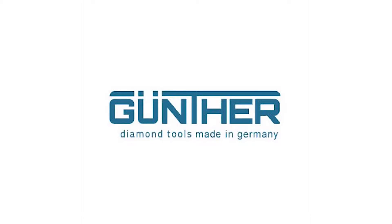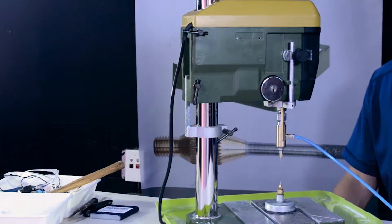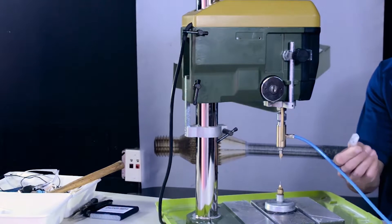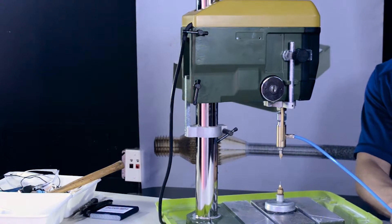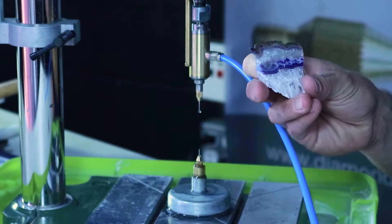Welcome back to another Gunther video. Today I had a request for drilling a really hard stone with the Gunther 1 millimeter drill bit. So today I picked some tumbled agate, a piece of quartz, and another piece of agate that somebody gave to me at a gem show.